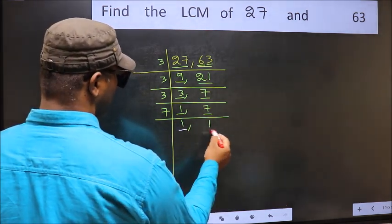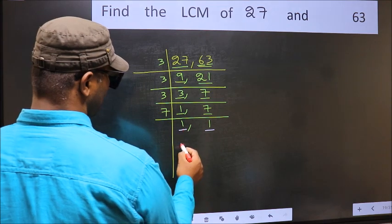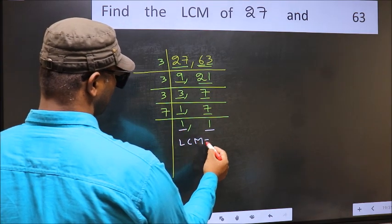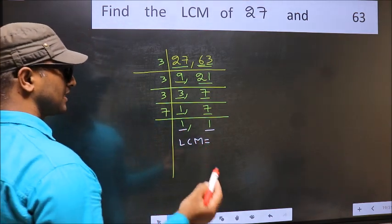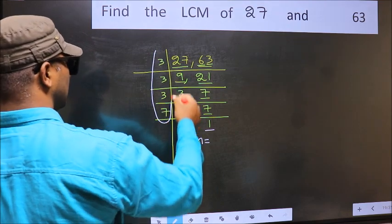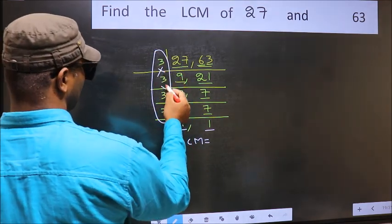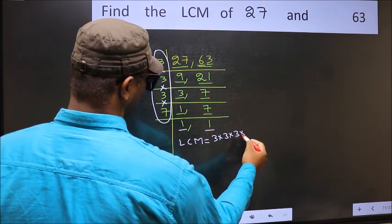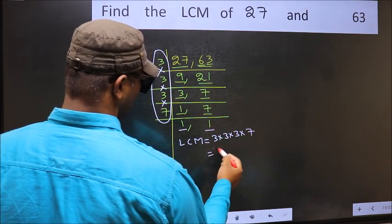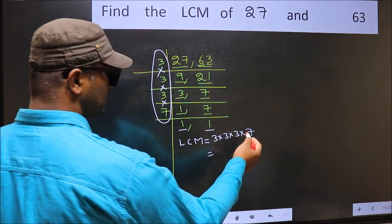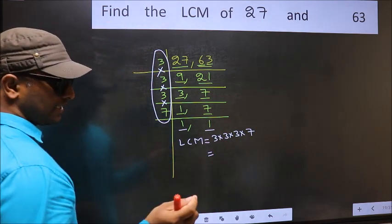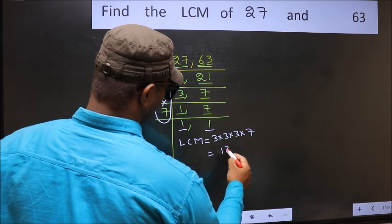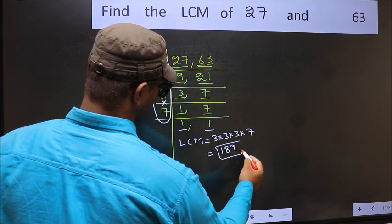We got 1 in both places. So our LCM is the product of these numbers: 3 into 3 into 3, finally into 7. When we multiply these numbers, we get 189 as our LCM.